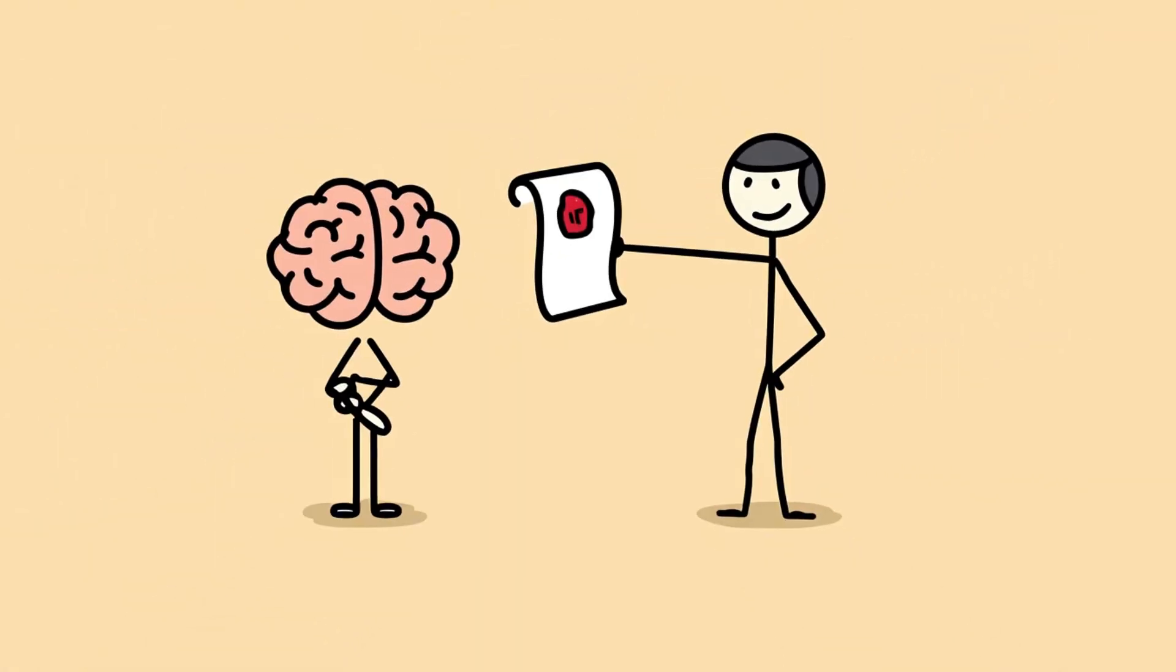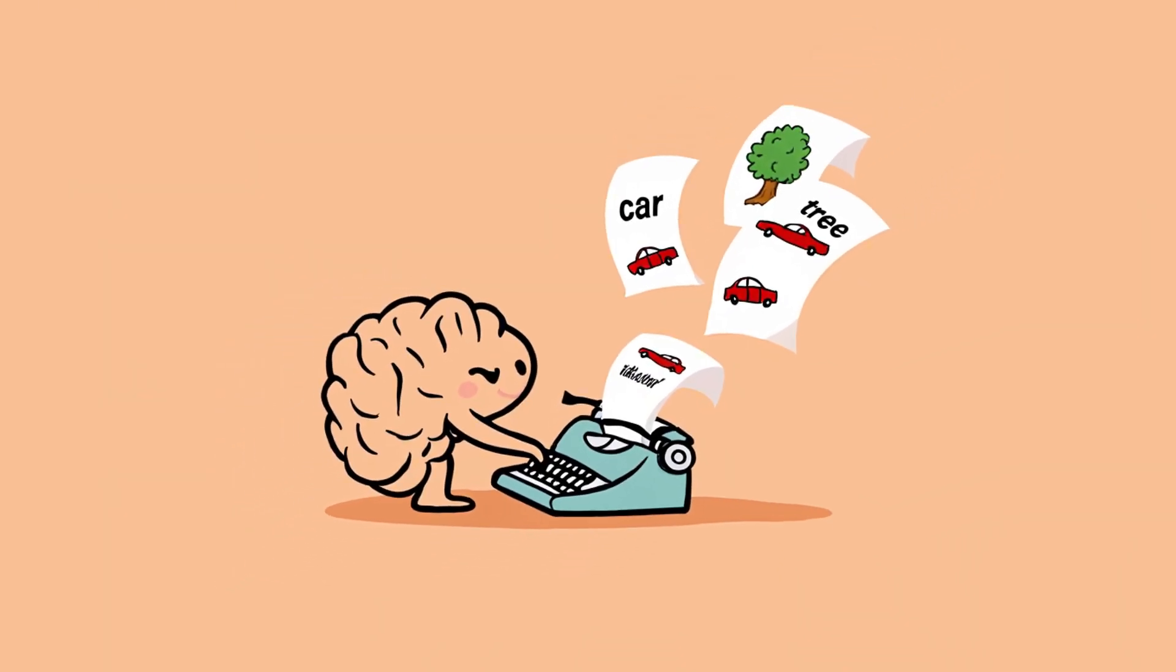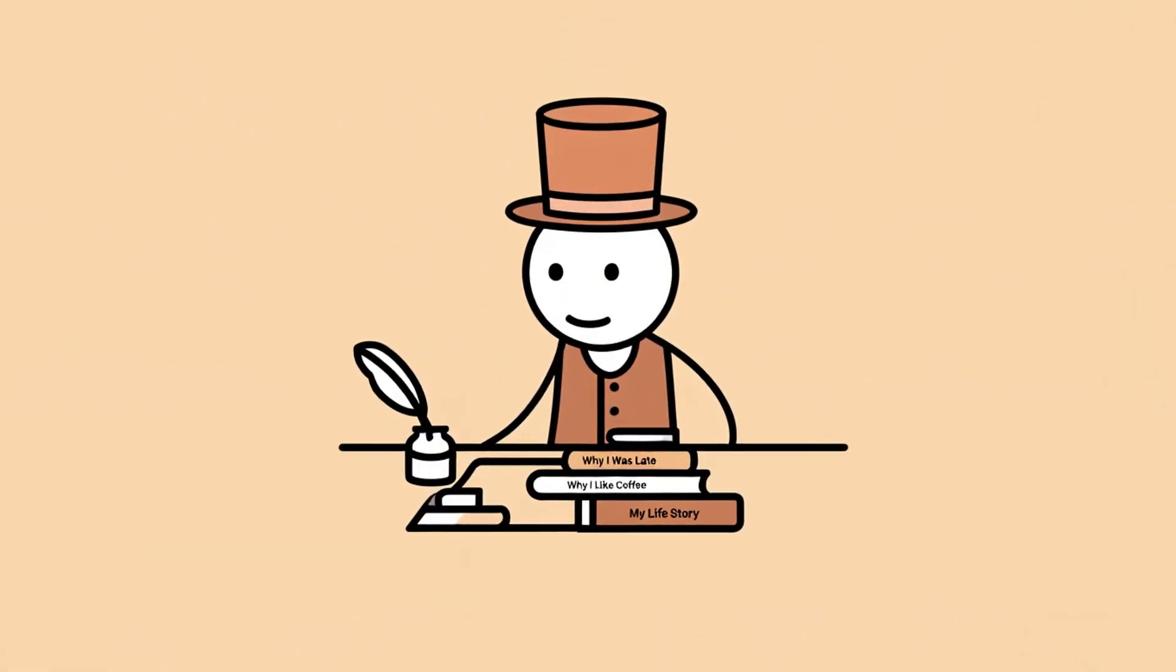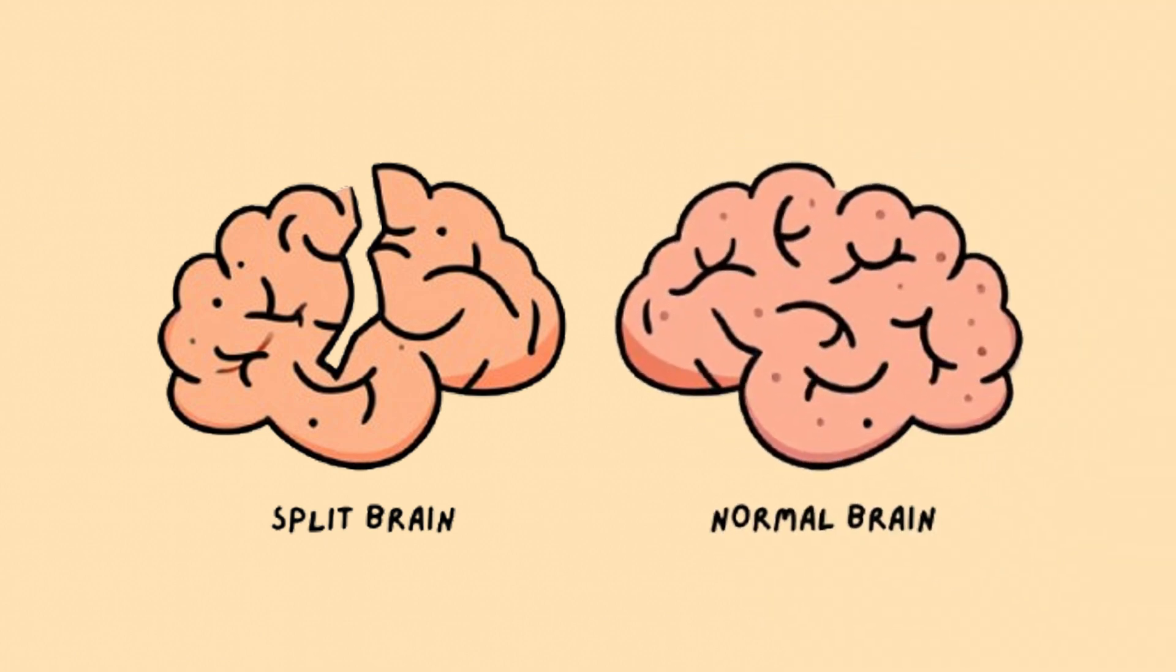Here's the creepy part. You don't even realize this is happening. You believe the lie your brain just told you. Because it doesn't feel like a lie. Your brain is really good at writing fiction and passing it off as reality. In fact, your conscious mind is basically a novelist, spinning stories to explain your life, your choices, and your emotions. Whether those explanations are true or not. And guess what? This doesn't only happen in split-brain patients. It happens in normal brains. Every day. Just more subtly.